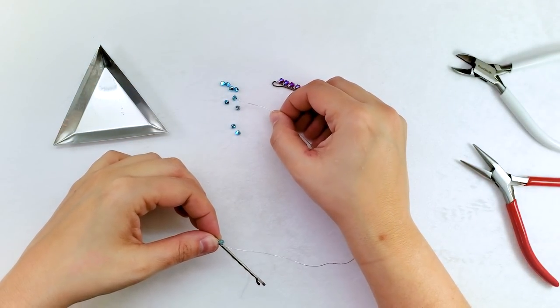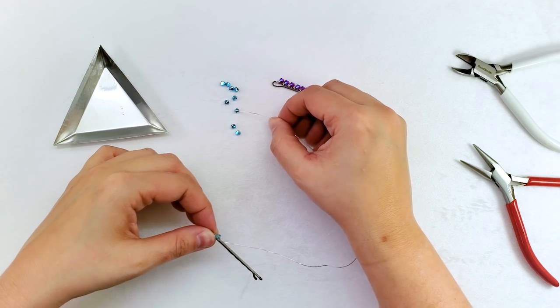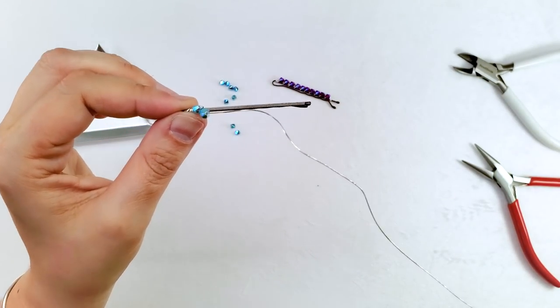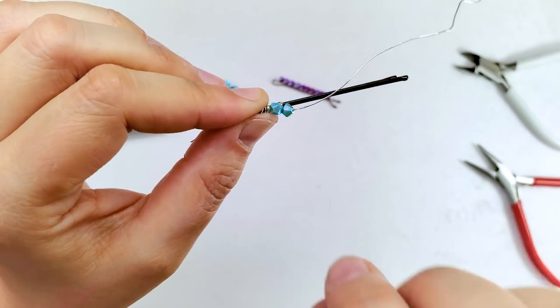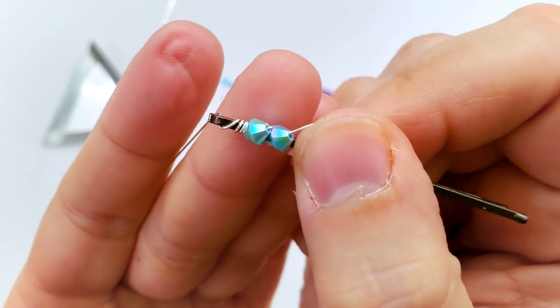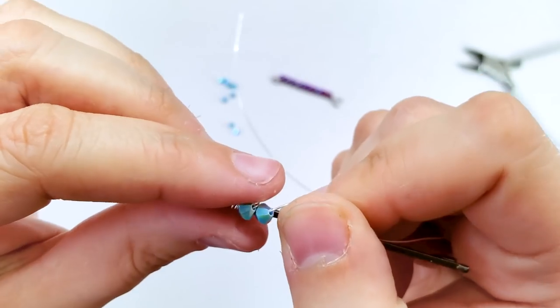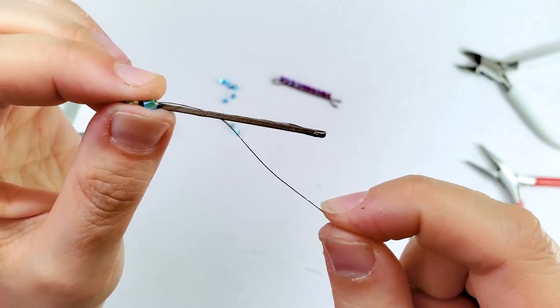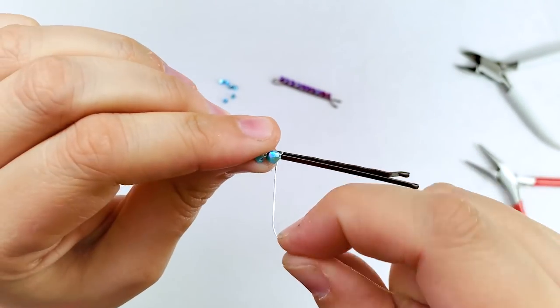I'm going to pick up another crystal, bring it down. You're going to lay it along the top of the bobby pin in the same angle as the first crystal. Bring your wire in between the bobby pin, underneath and back up.